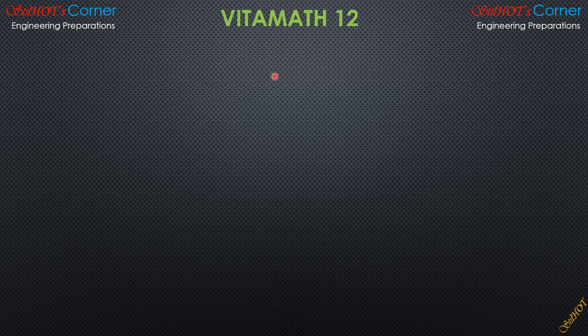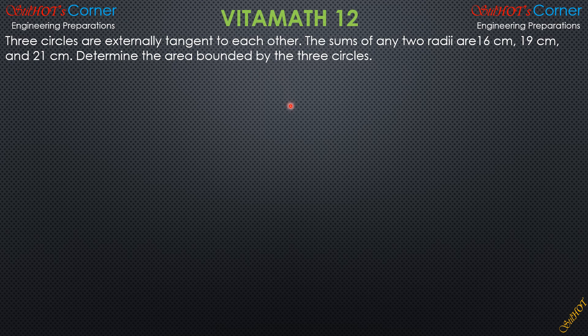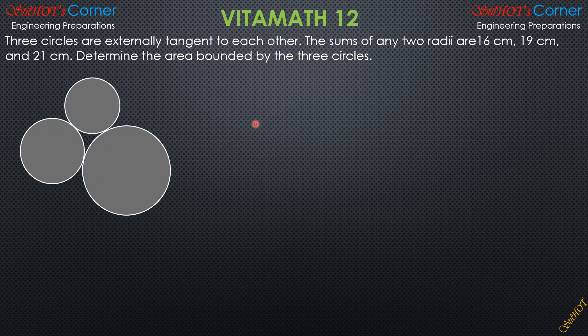Here is Vitamath 12. Three circles are externally tangent to each other. The sums of any two radii are 16 cm, 19 cm, and 21 cm. Determine the area bounded by the three circles. To help visualize the situation, let's have the three circles. We will denote the radius of the smallest circle as R1, the next as R2, and the largest circle in this problem as R3.